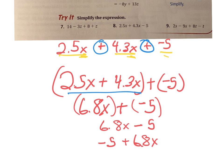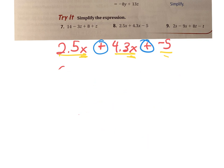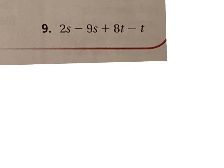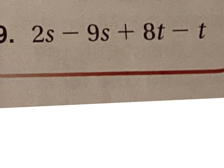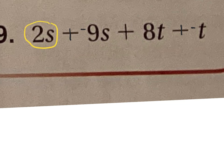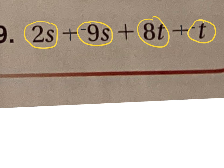Let's do number 9. We have two s's. Instead of minus 9s, I'm going to plus negative 9s. And instead of minus t, I'm going to add a negative t. So my terms are 2s, negative 9s, 8t, and negative t — or negative 1t.